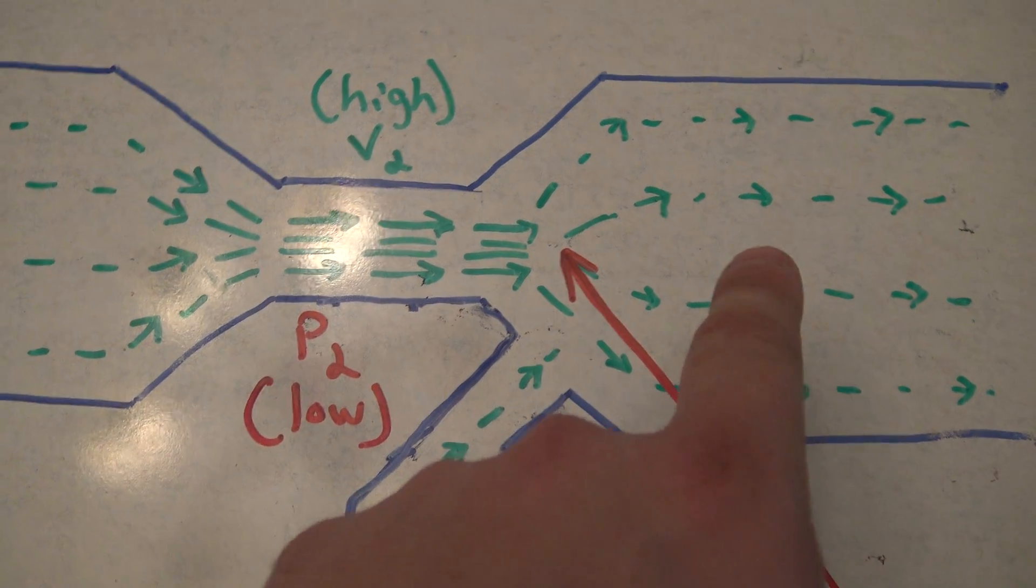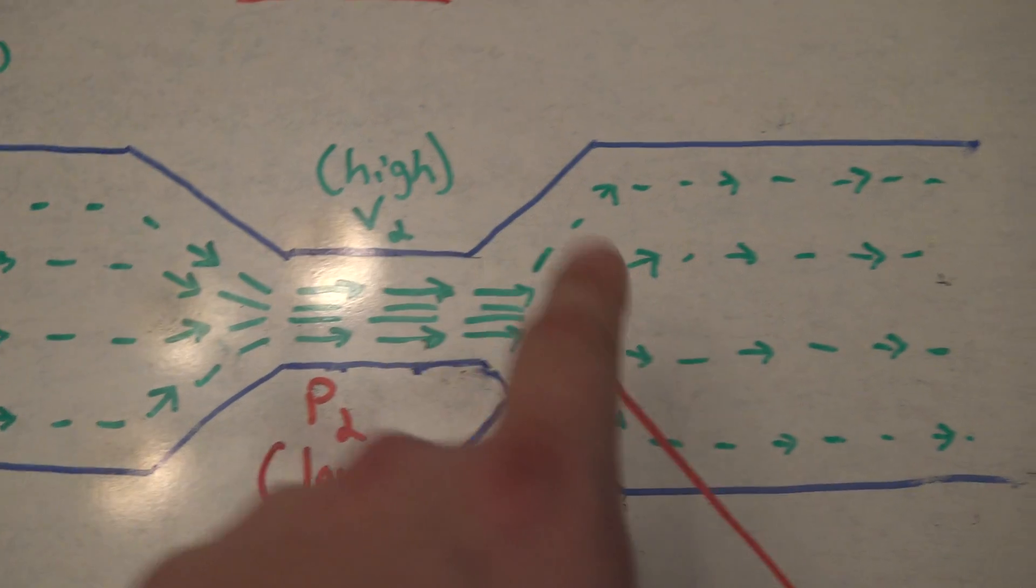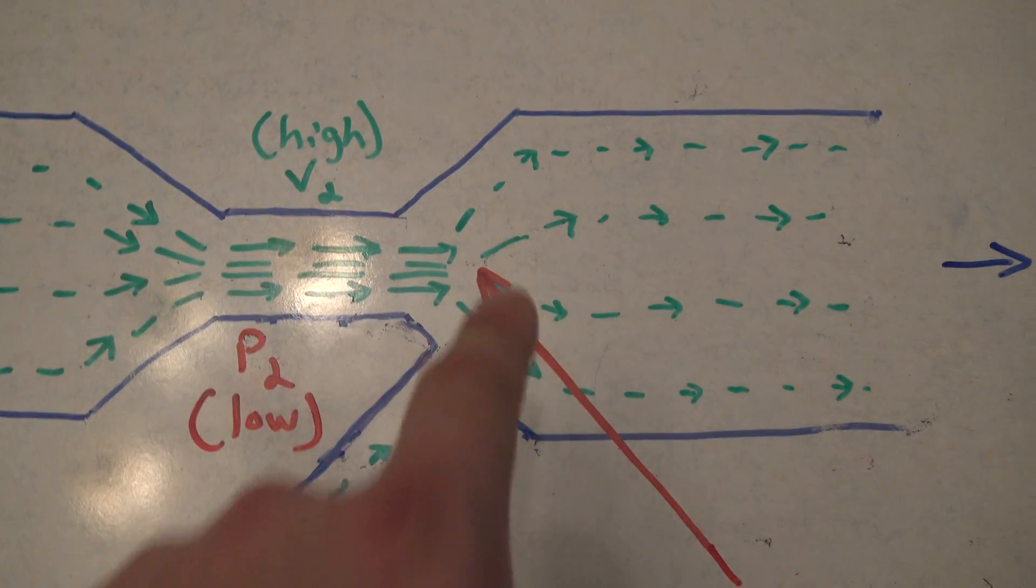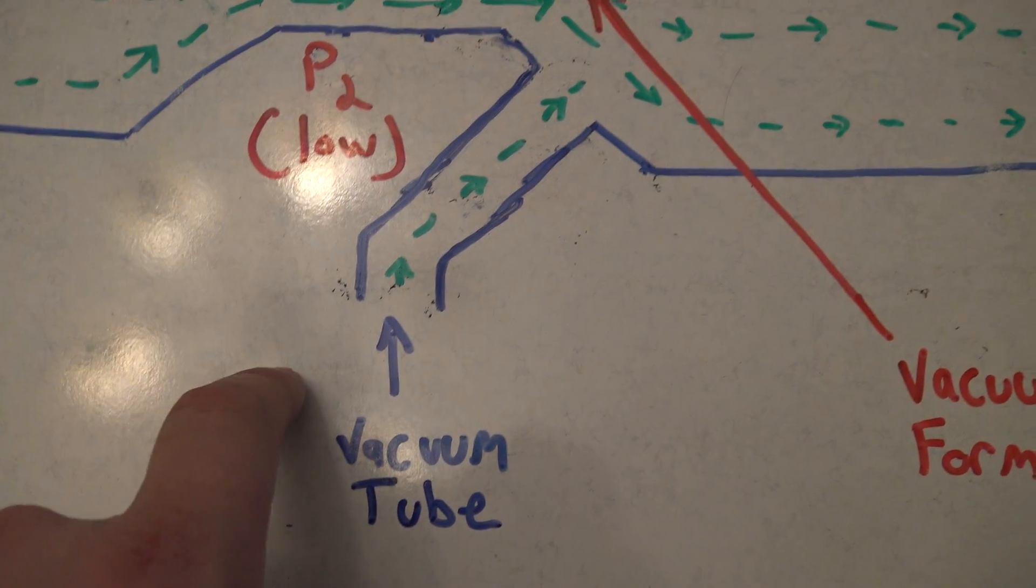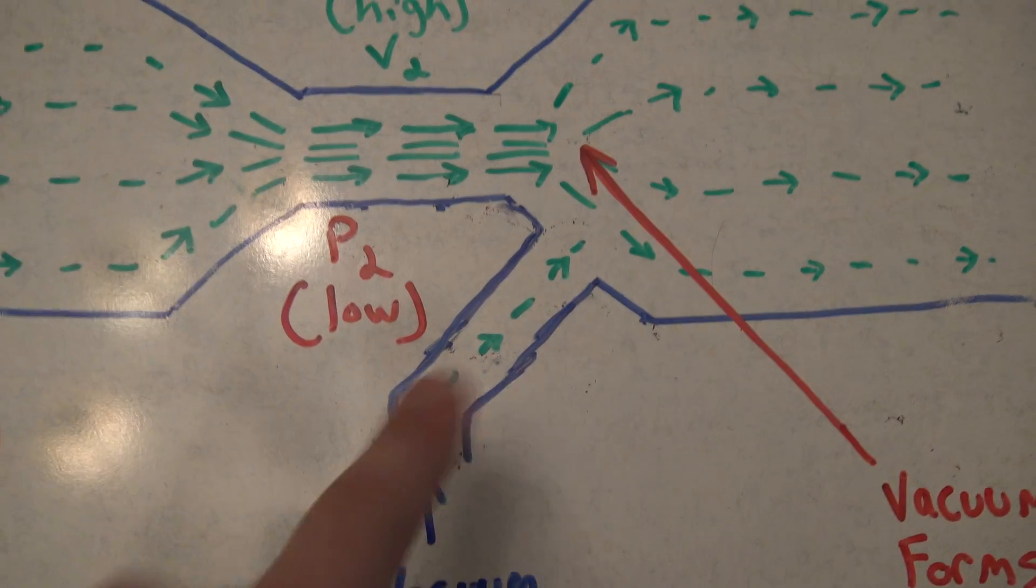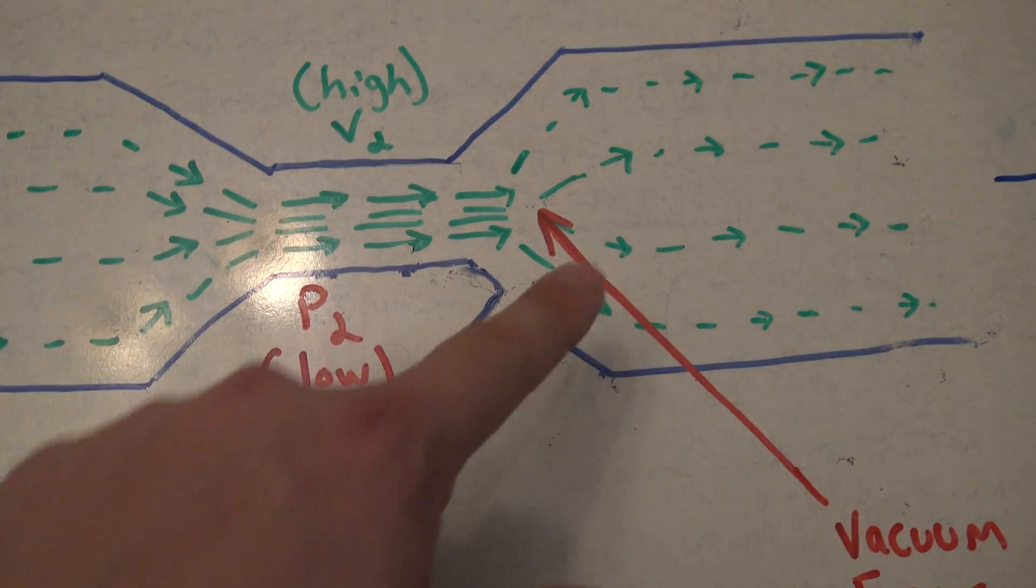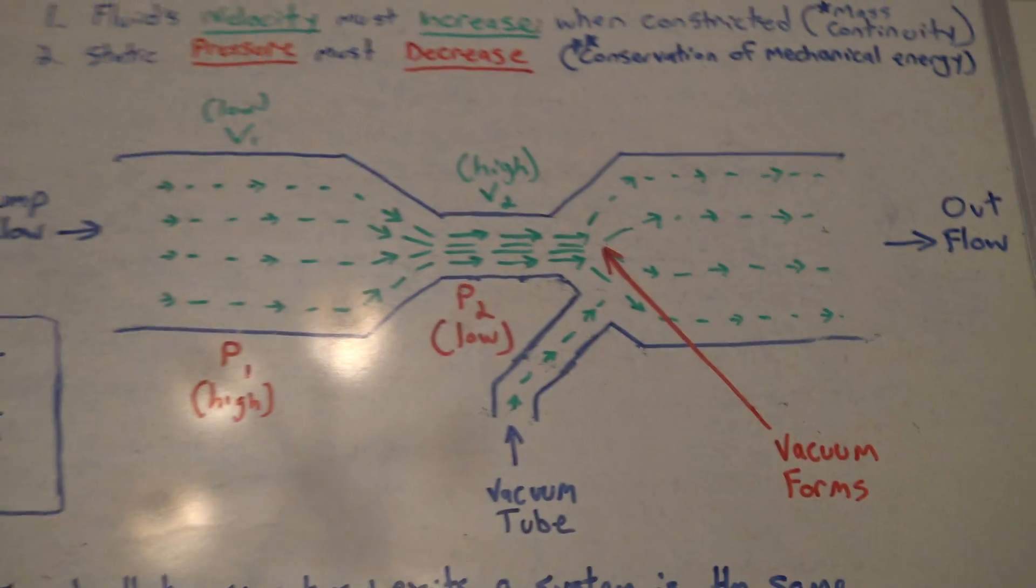And in this area where you have a high velocity which is turning into a low velocity once again, you have the ability to add a vacuum tube. So you can insert water from your aquarium or from another system, like an atmospheric system, into your Venturi flow.